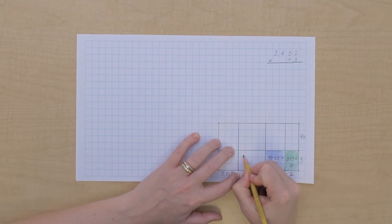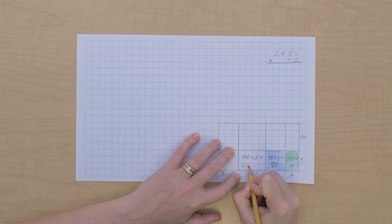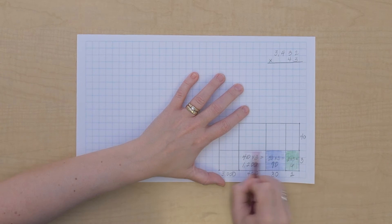Now I have 400 times 3. Hundreds times units gives us hundreds, so we've got 1200. Let's color that one red.